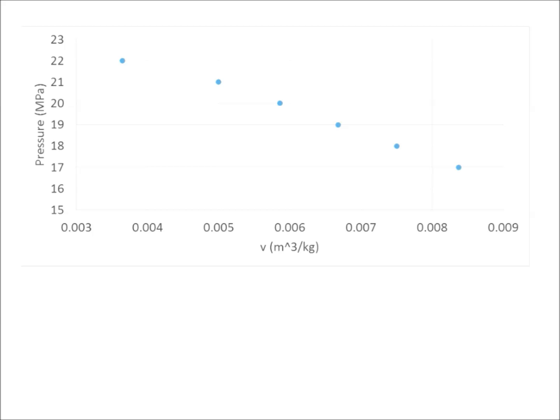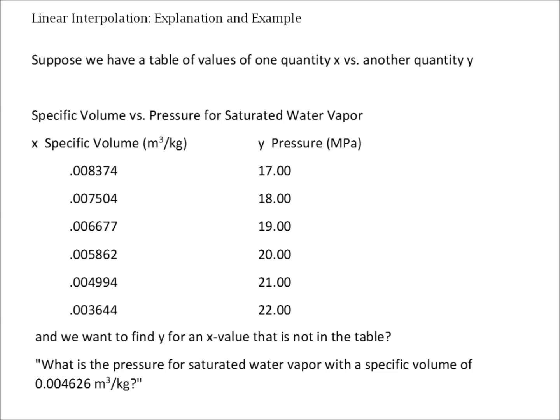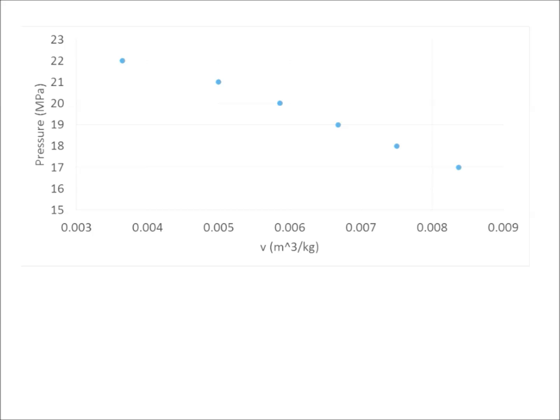Here I have a graph plotting the same data that was in the table in the previous picture. Remember, we wanted to find the saturated water vapor pressure for a specific volume of about .0046. We could read off of this graph and estimate the pressure at that particular specific volume.